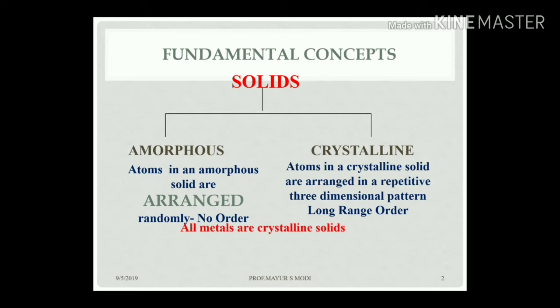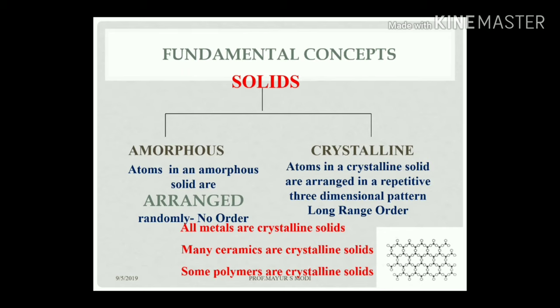All metals are crystalline solids, many ceramics are crystalline solids, and some polymers are crystalline solids. In crystalline solids you have a perfect order structure, while in non-crystalline or amorphous materials you have a random order structure.